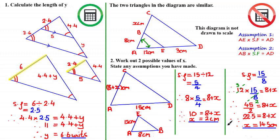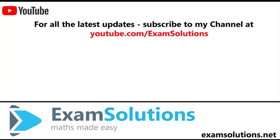The key takeaway from this question is: if the diagram isn't drawn to scale and you can't say anything about the angles inside the shapes you're comparing, then you can't say for sure whether one side in particular is similar to another. I hope you took something from these questions — thanks for joining us, keep up the good work, and I'll see you in the next tutorial. If you like this video please give us a thumbs up, leave your comments below, and subscribe to the channel so you'll be the first to know when we release our next videos.